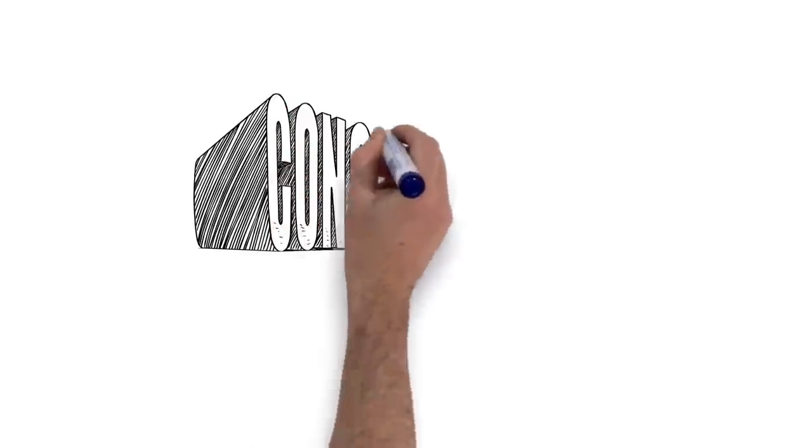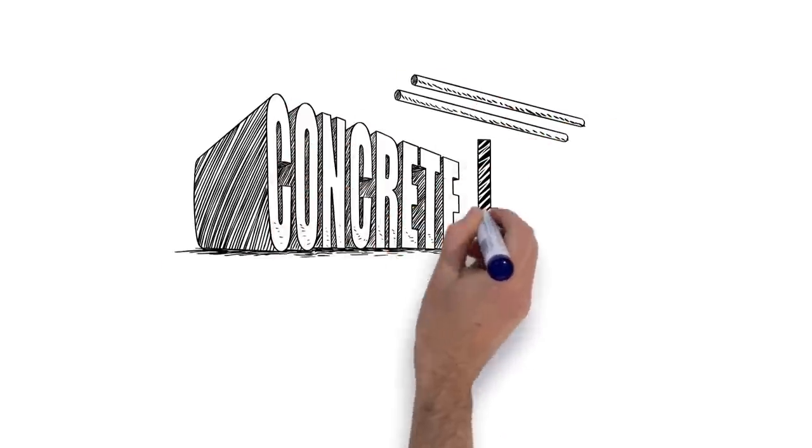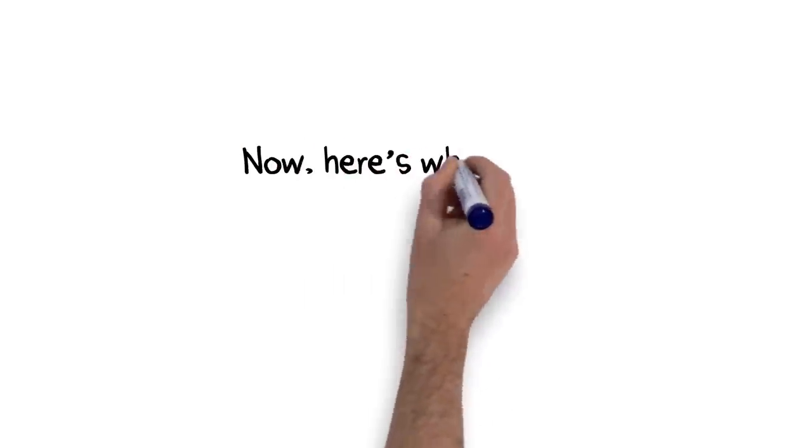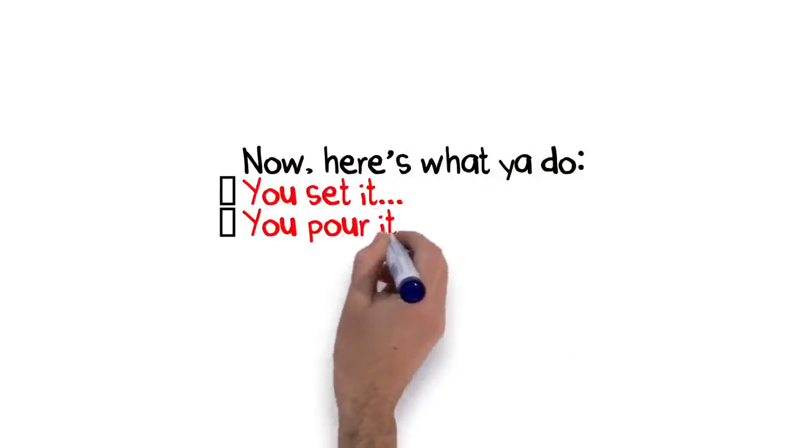Well, it's a concrete cattle guard form, see? And it comes already pre-installed with reinforcing rods. Now here's what you do. You set it, you pour it, then you leave it.